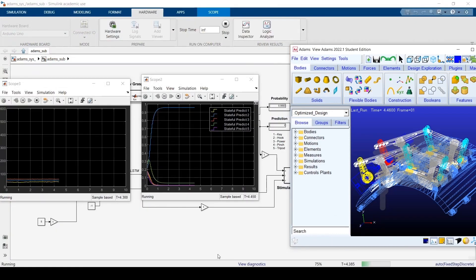Once we initiate a grasp here we'll initiate the pinch grasp. We see that a prediction is made and it correctly predicted the grasp and then the output is sent to the Adams model.